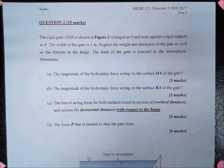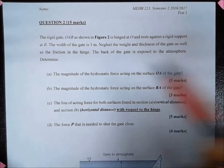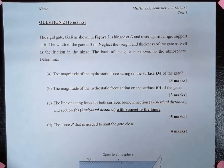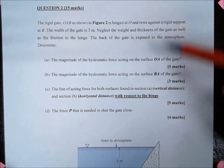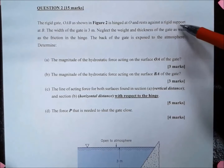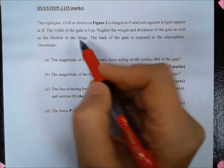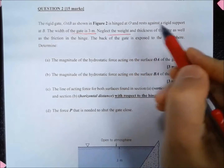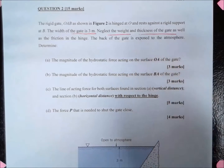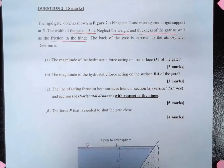Bismillahirrahmanirrahim. This question is related to hydrostatic force on submerged plane surfaces. Here we have a rigid gate that is hinged at O and rests against a rigid support at B. The width of the gate is given by 3 meters. We can neglect the weight and the thickness of the gate as well as the hinge and the friction in the hinge.